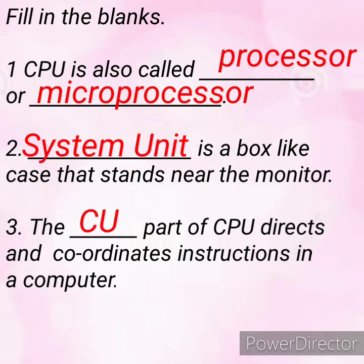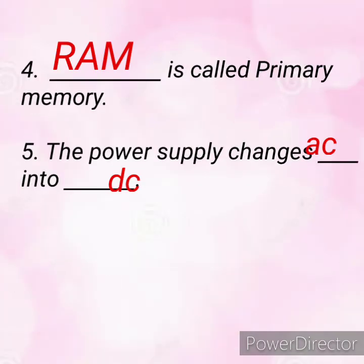Question three: the dash part of CPU directs and coordinates the operations and instructions in the computer. The answer is CU, that is Control Unit. Question four: dash is called primary memory. The answer is RAM — Random Access Memory — also known as main memory.